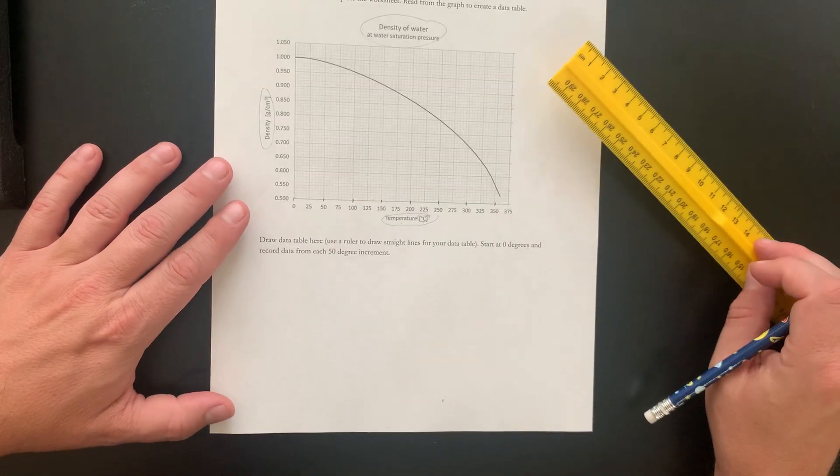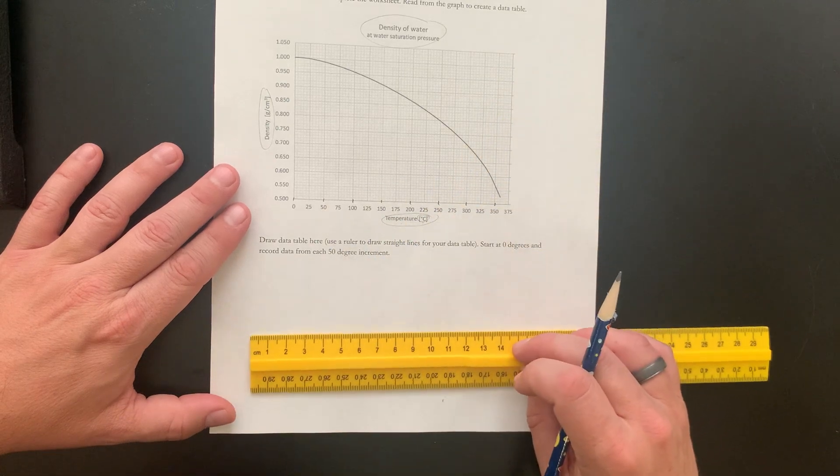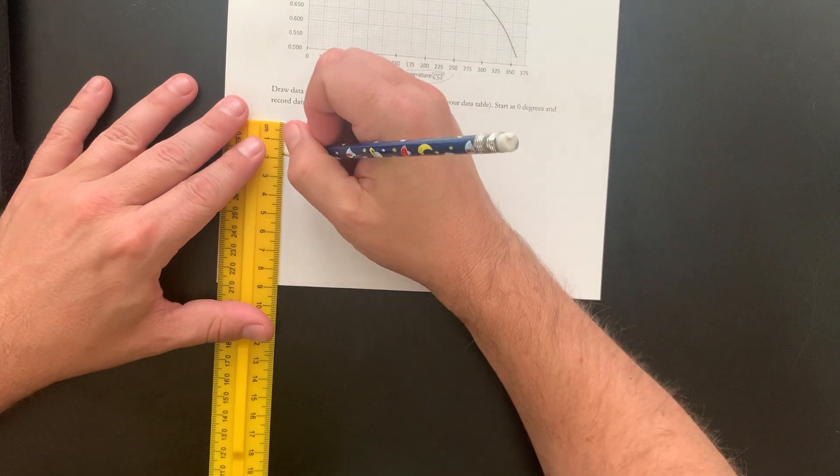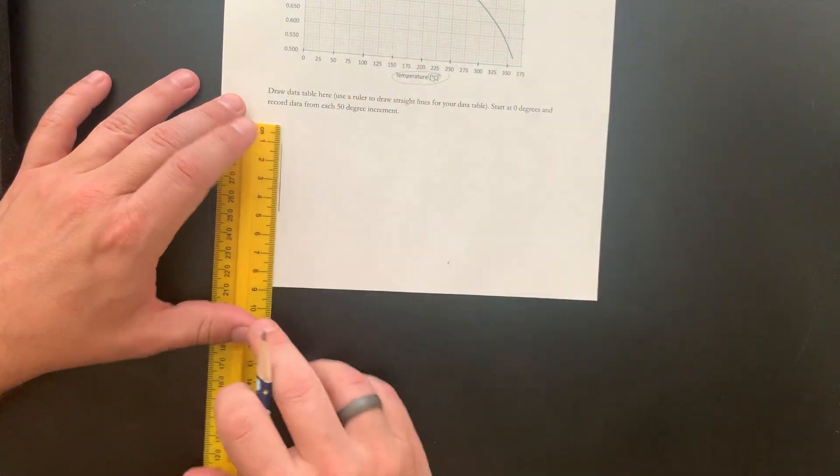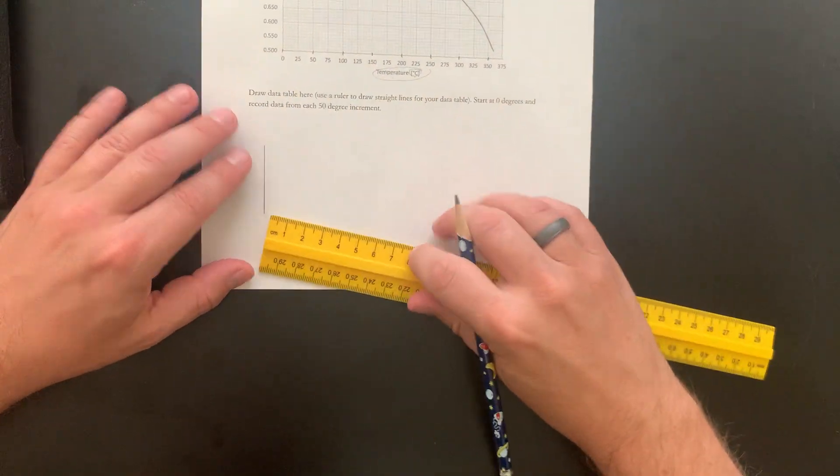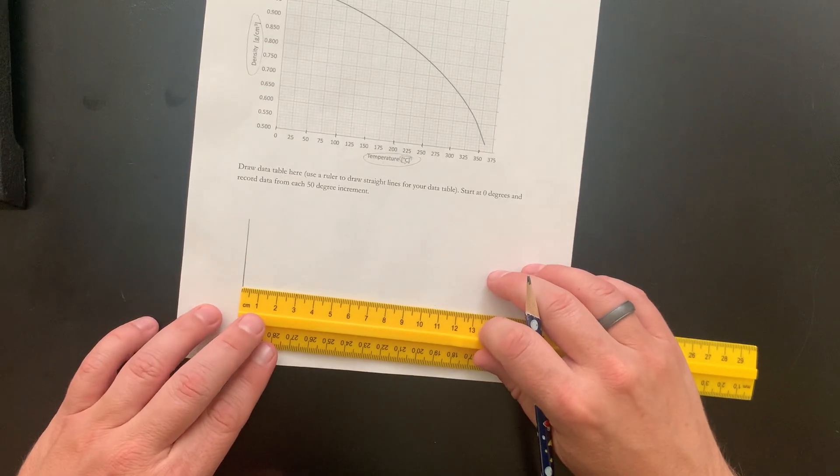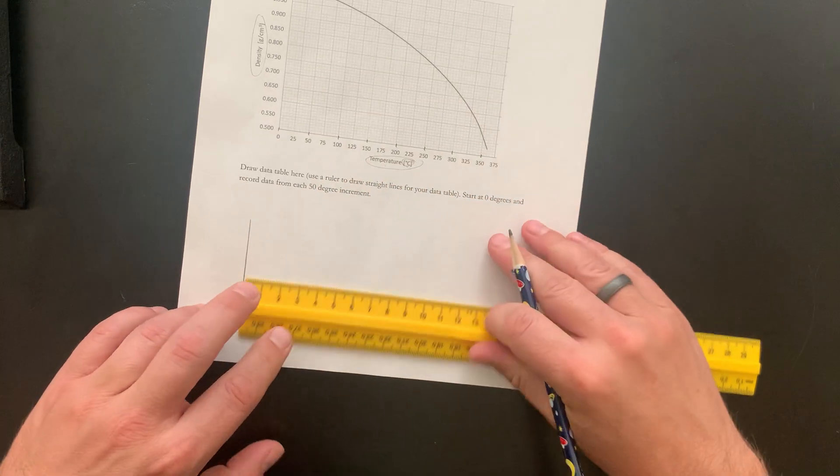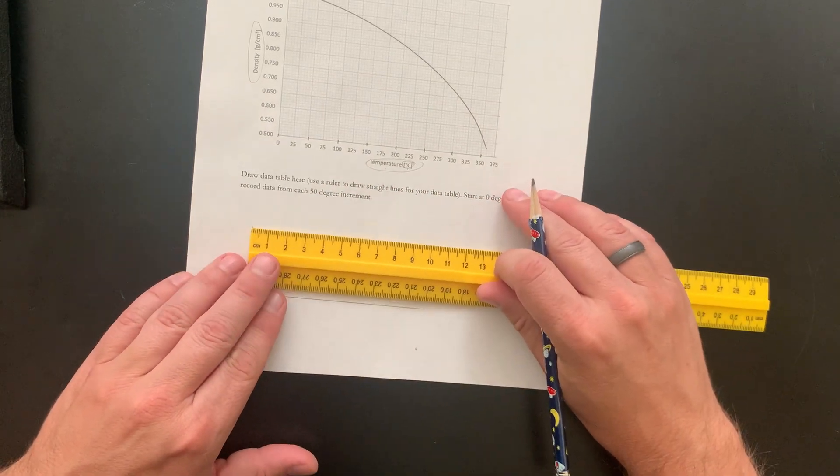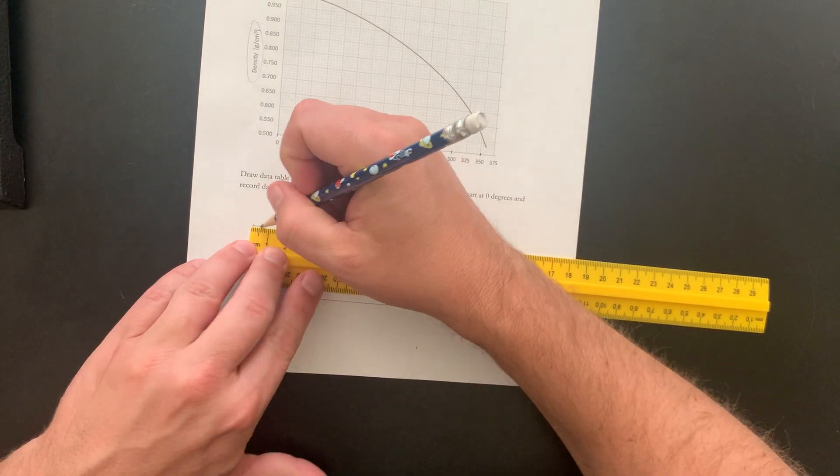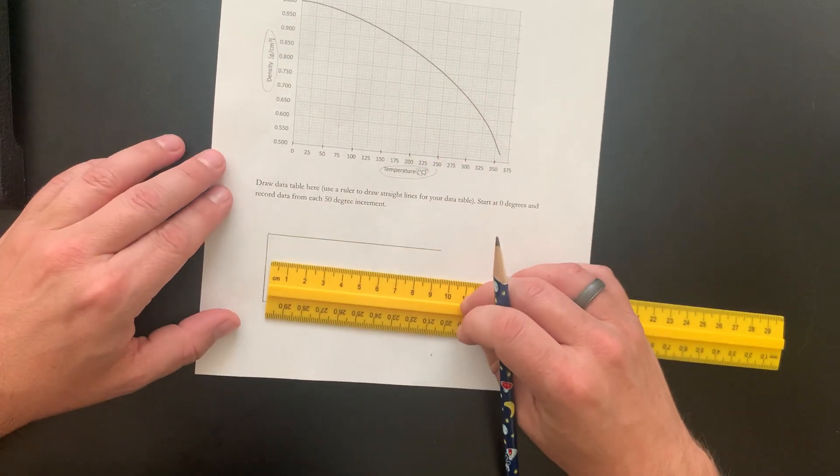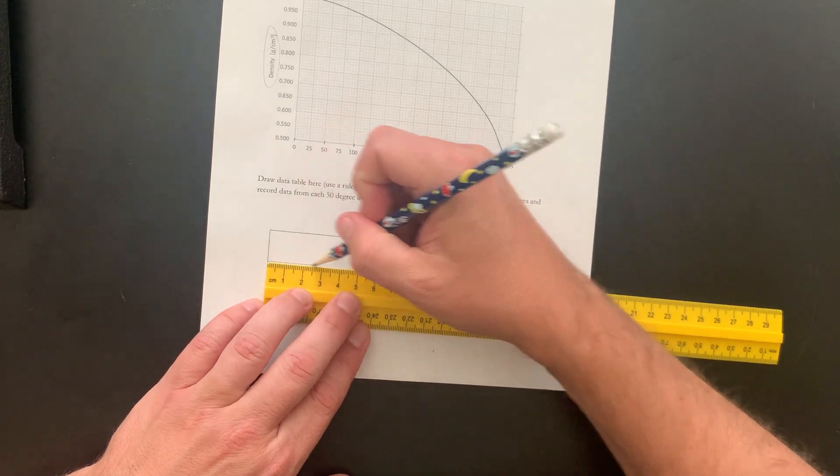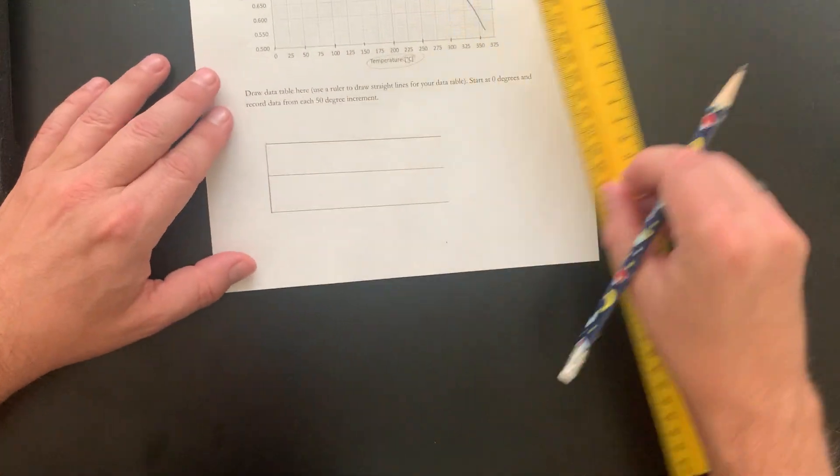For my data table, I think I only need two rows. So let's start by doing that. I'm not sure how long I want to make it yet. So I'll keep it kind of short. And if I'm doing two rows, I need a line down the middle here.